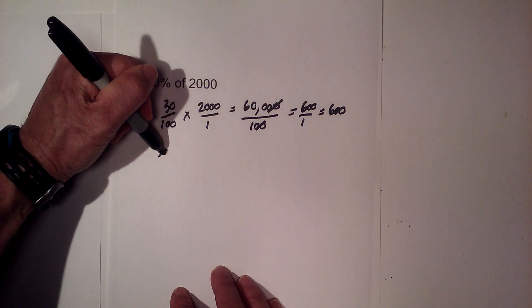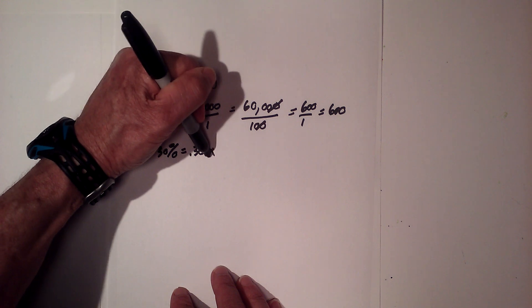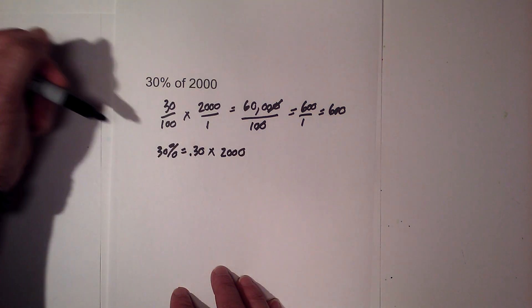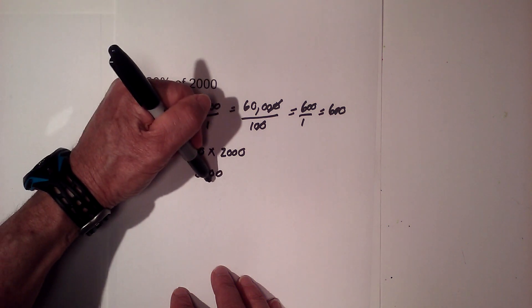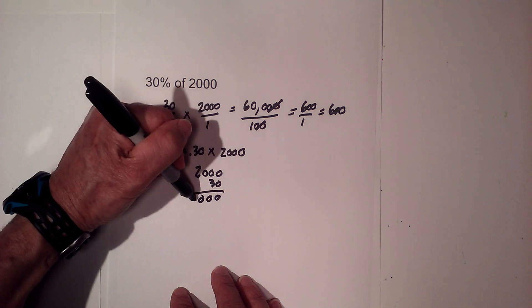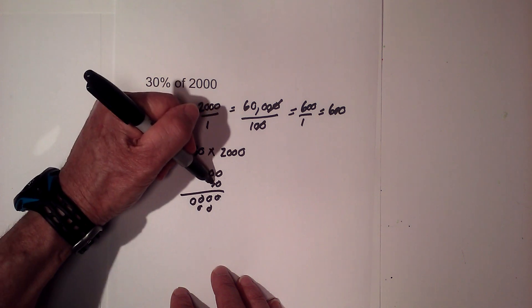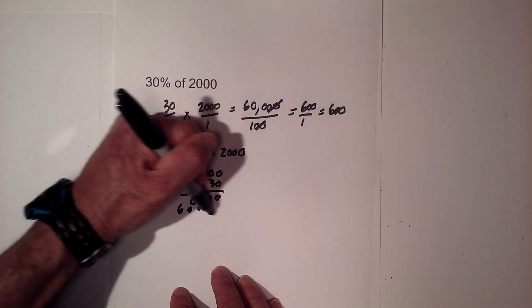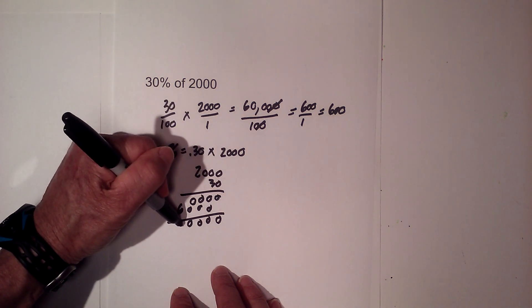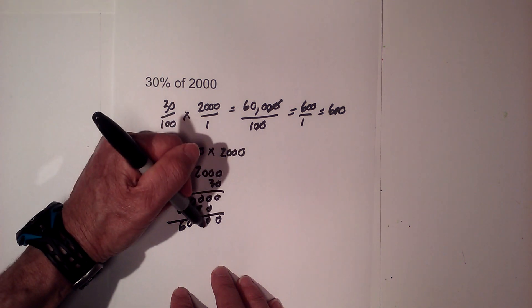Now convert 30% to a decimal: 0.30. Multiply by 2,000. Working through the multiplication: 2,000 times 30 equals 60,000. There are two decimal places needed, so placing the decimal gives 600.00, which equals 600.